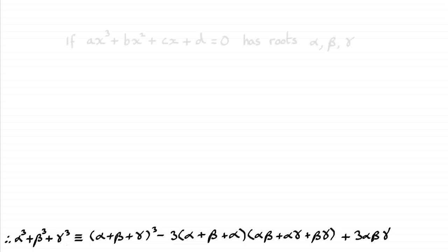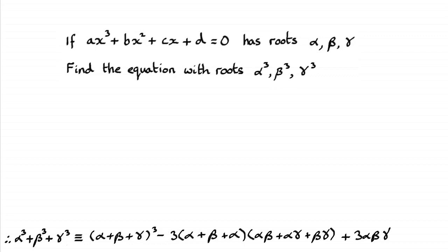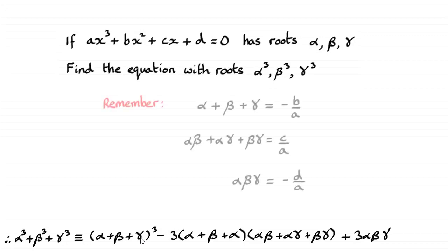Suppose you're given a cubic polynomial with roots alpha, beta, and gamma, and you're asked to find a new cubic equation with the cubes of those roots. One of the identities you'll need is alpha cubed plus beta cubed plus gamma cubed. You would normally be given this identity, which involves the sum of the roots alpha plus beta plus gamma, the sum of products of pairs of roots, and the product of roots — so you can make your normal substitutions.